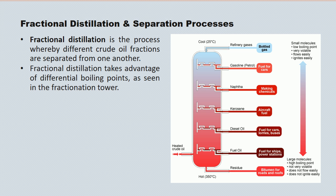Fractional distillation takes advantage of differential boiling points as seen in the tower here. Crude oil is pumped in near the bottom and we heat the tower — this is around 350 degrees, though I've seen these as high as 500 degrees. We separate fractions based upon differential boiling points.